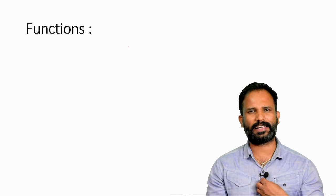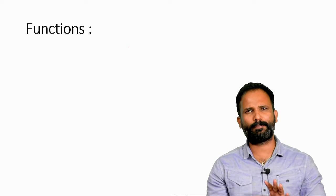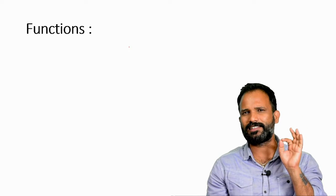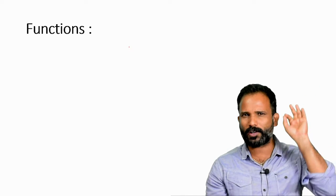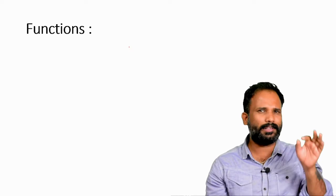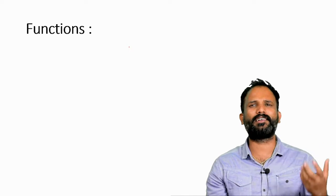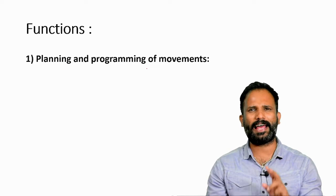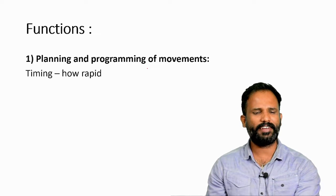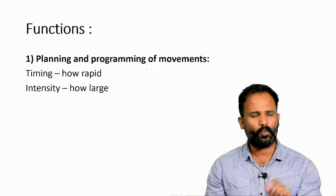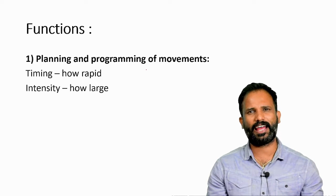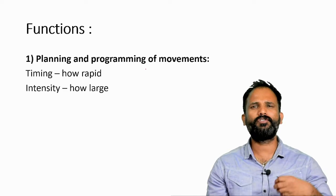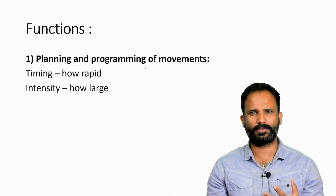Basal ganglia can be excitatory or inhibitory depending on which pathway is chosen — indirect is inhibitory, direct is excitatory. The prime function of basal ganglia is to coordinate with the motor cortex. The motor cortex gives the order and the basal ganglia plans that order — planning and programming of movements. This involves two aspects: timing of the activity and intensity of the activity.